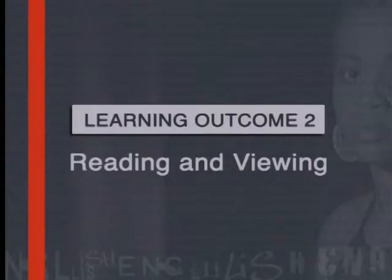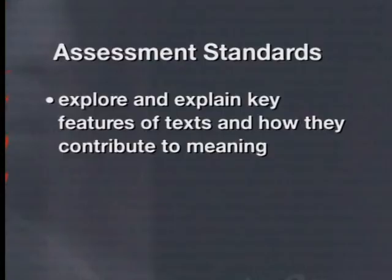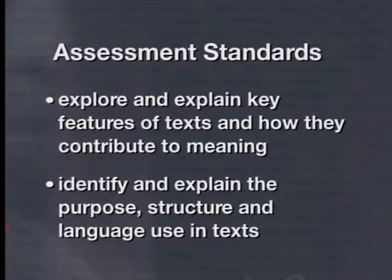The lessons in this series all address learning outcome two, reading and viewing. They will help learners to achieve a range of assessment standards, including being able to explore and explain key features of texts and how they contribute to meaning, and to identify and explain the purpose, structure, and language use in texts. Before the start of each lesson, we will state the outcome and assessment standards addressed, and in most lessons and in the lesson notes, we will give the lesson outcomes.